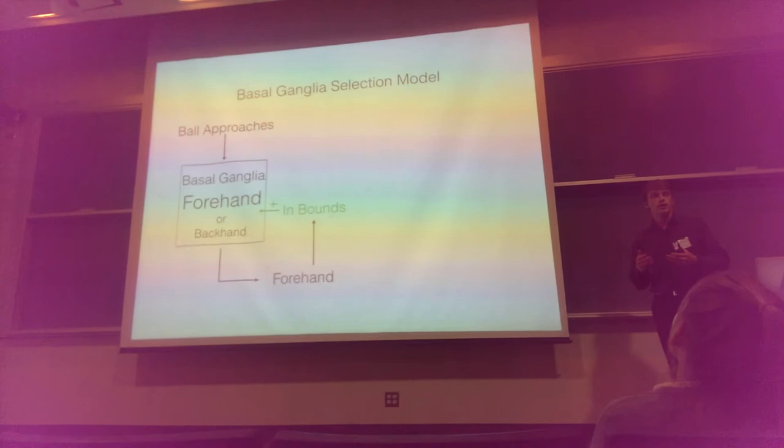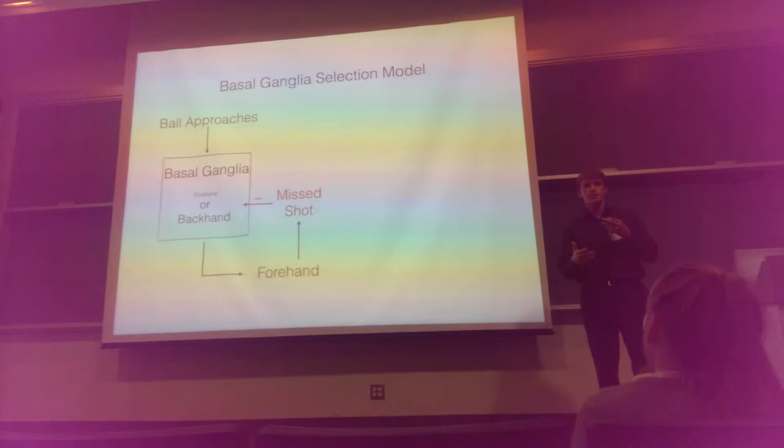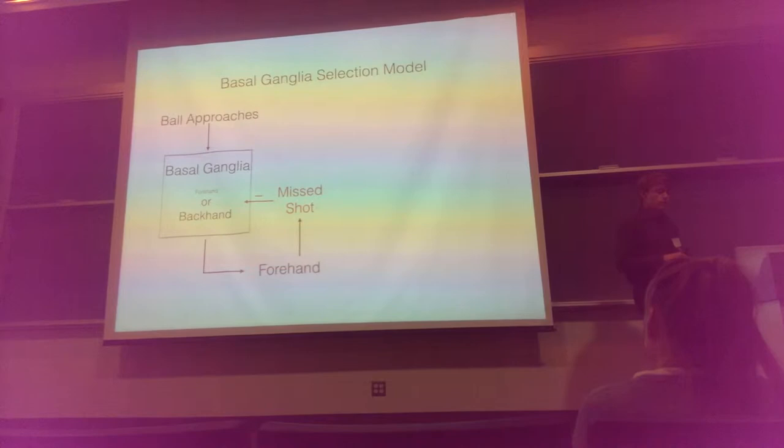In contrast, if you miss the shot, that's a negative reward. That negative reward is negatively reinforcing, and it's going to make you less likely to pick that forehand in the future. So this system, through trial and error, learns to select actions that lead to positive rewards and avoid actions that lead to negative rewards.